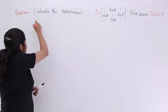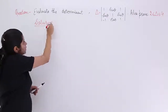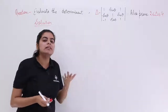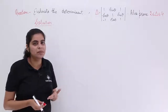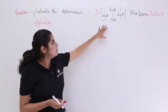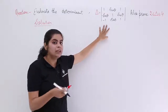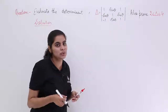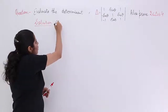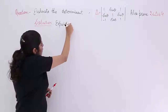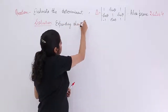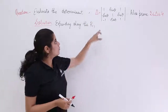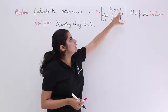I write the heading as 'Solution' and we start with the solution. We have to evaluate this determinant. There are 6 available options: evaluate by any of 3 rows or any of 3 columns. Let's start with the standard one — expanding along the 1st row (R1). The first row contains: 1, sin theta, 1.